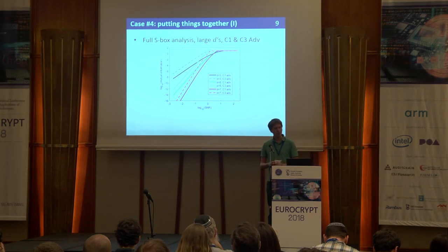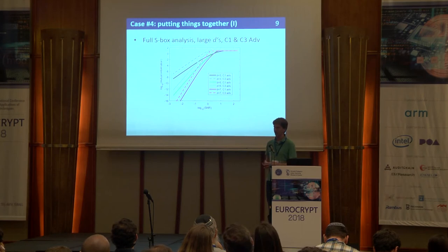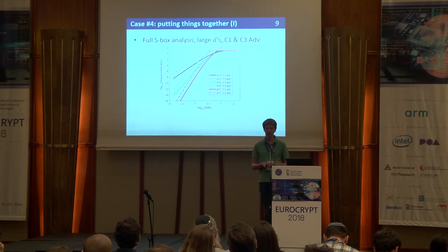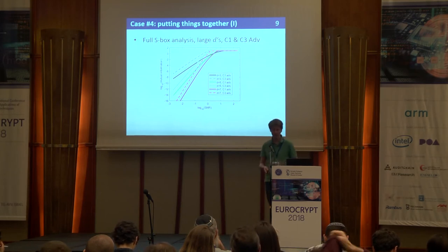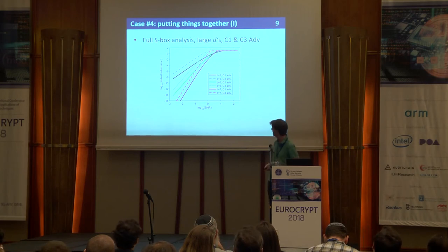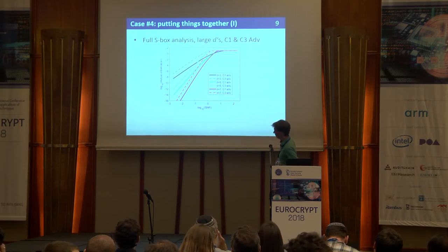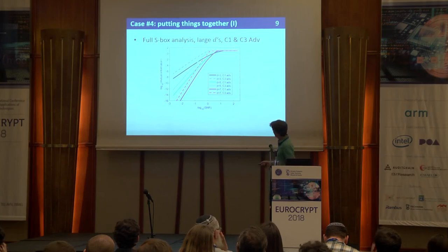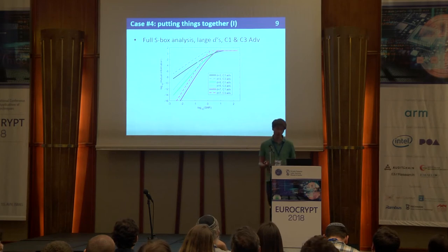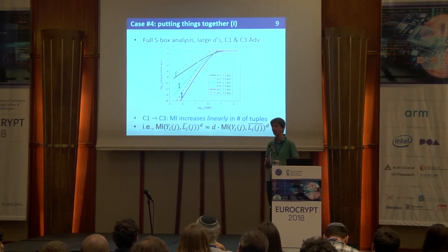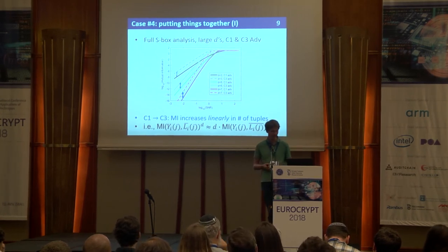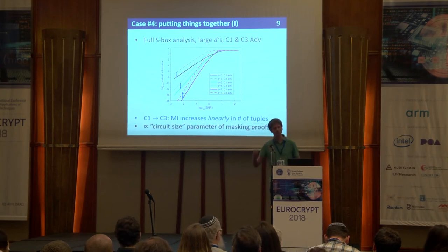Now we have all the tools to put things together. For squarings applied independently on all shares, we use the independent operation assumption. We can build security graphs for full S-boxes with a large number of shares for C1, C2, and C3 adversaries. The color indicates the number of shares — going down means more security. The plain curve is C1, the dashed curve is C3, which gives less optimistic security claims. Moving from C1 to C3, mutual information increases linearly in the number of tuples — polynomially in D — because more computation means more leakage, but since masked implementations remain reasonably efficient, this is not a killer.